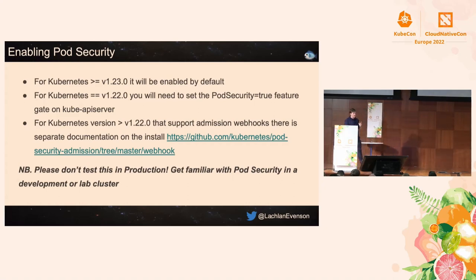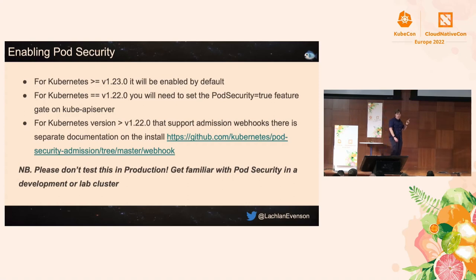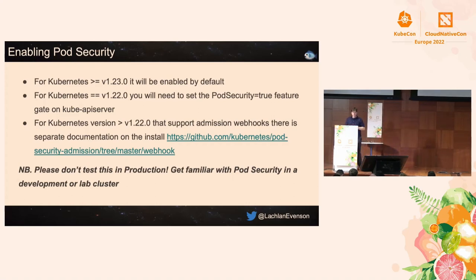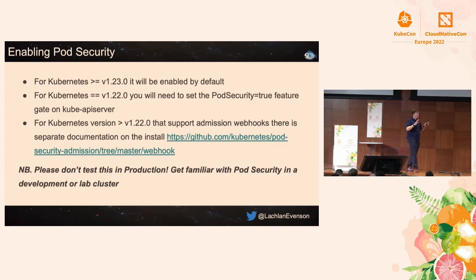Enabling pod security: on 1.23 it's enabled by default because beta features are enabled by default. If you're on 1.22, you'll need to set a feature flag on the API server. If you don't have access to those flags, you could also deploy a webhook admission controller, which works on versions lower than 1.22. Important disclaimer: don't test this in production. Get familiar with it in a development setting or a lab cluster — spin it up on kind — before you turn it on in prod.